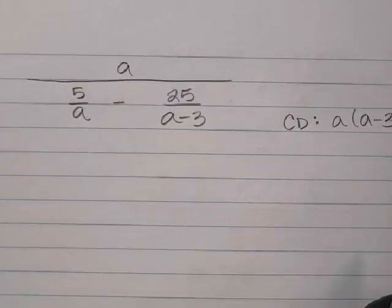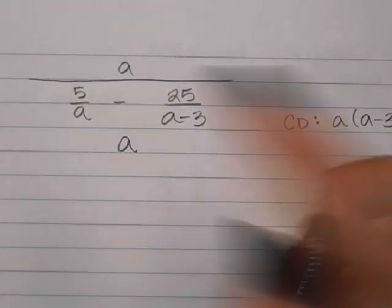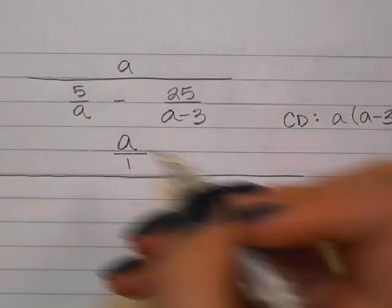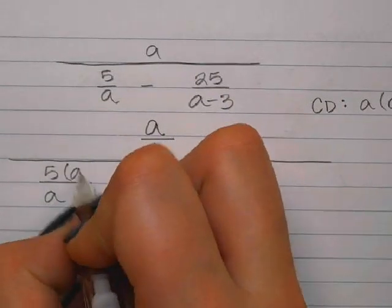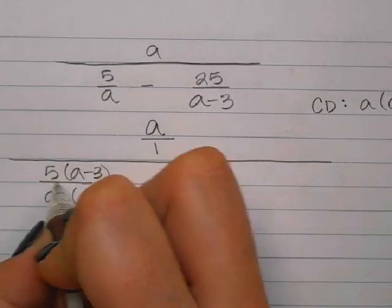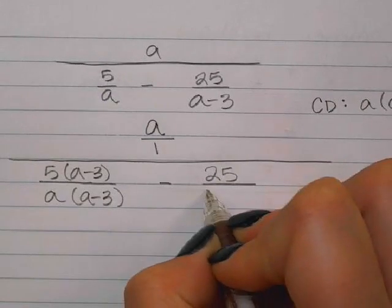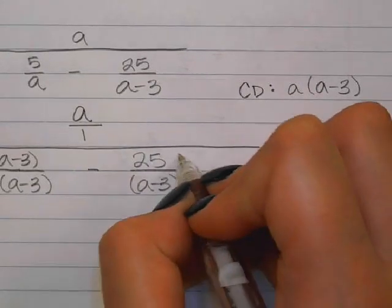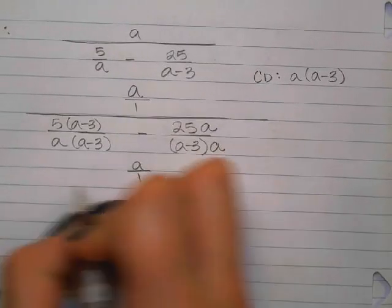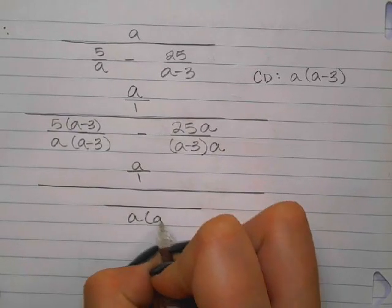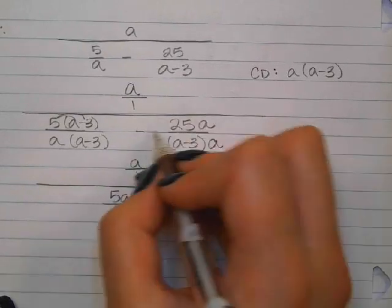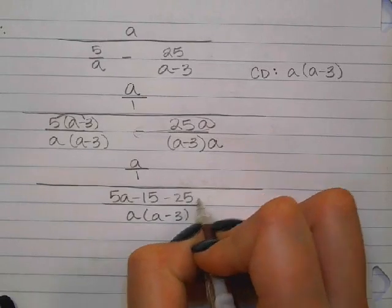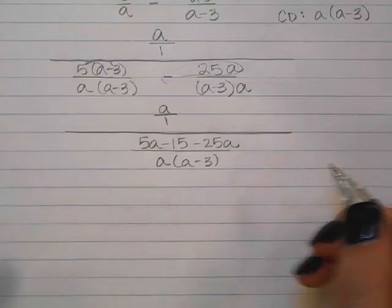For the top fraction, it's like a whole number so I write it as a over 1. On the bottom, I have 5 over a — it has a but not the (a minus 3), so I multiply top and bottom by (a minus 3). And minus 25 over (a minus 3) has the (a minus 3) but not the a, so I multiply top and bottom by a. That gives a common denominator of a times (a minus 3). So the bottom becomes 5a minus 15 minus 25a. Now I can do keep it, change it, flip it.